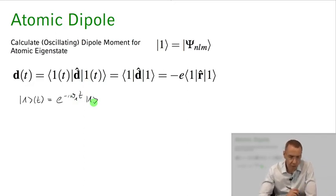So now if we calculate the expectation value of the dipole operator, these exponential terms are going to cancel because here for state 1(t) I get e^(-iω₁t), but for the bra vector 1(t) I get e^(iω₁t), so they're just going to cancel. So all the time dependence is going to be gone and we're just left with the expectation value of the dipole operator over this state 1.